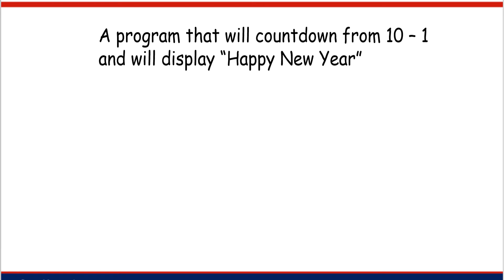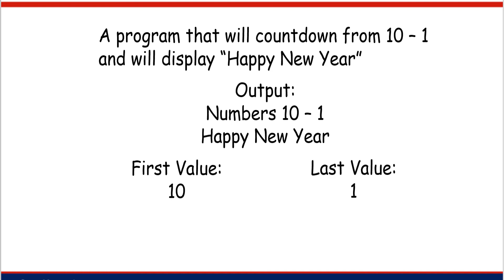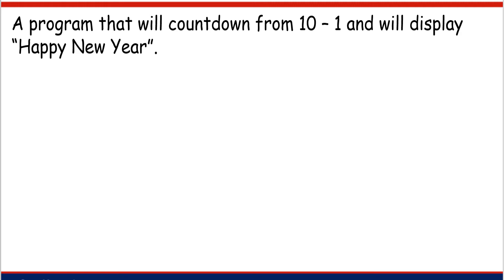Let's proceed to the second example: a program that will count down from 10 to 1 and will display Happy New Year. The outputs are numbers 10 to 1 and Happy New Year. The first value is 10 because the program counts down from 10 to 1. The pattern is previous value minus 1 equals next value — for example, 10 minus 1 is equal to 9, 9 minus 1 is equal to 8, and so on.